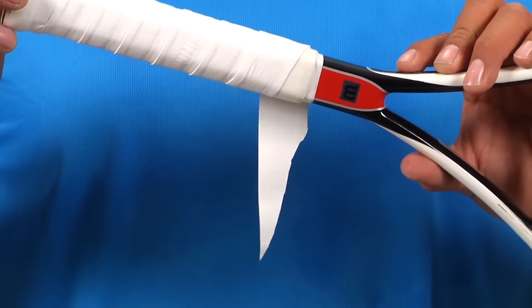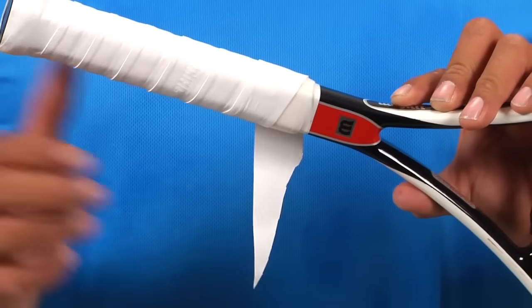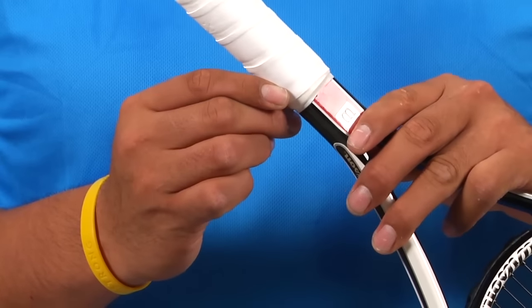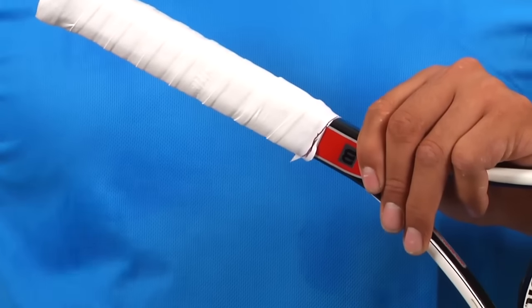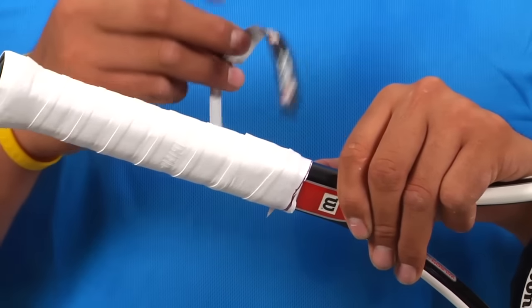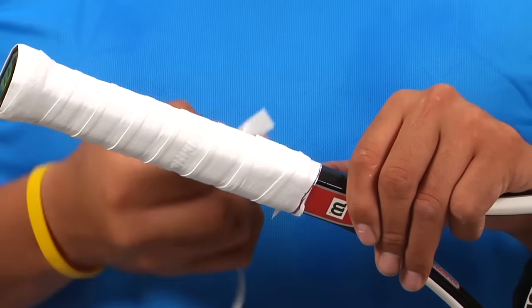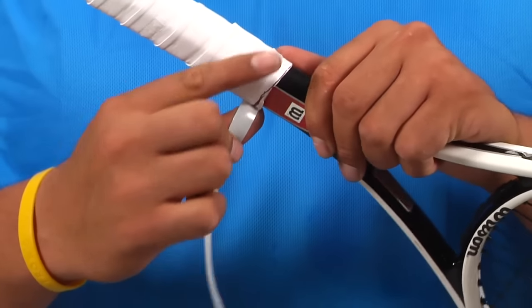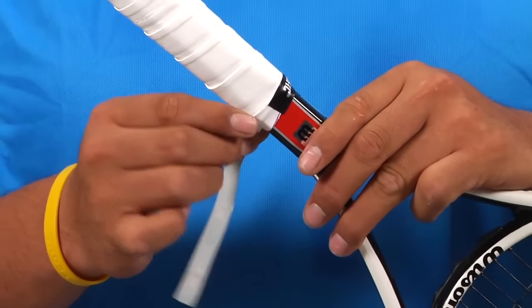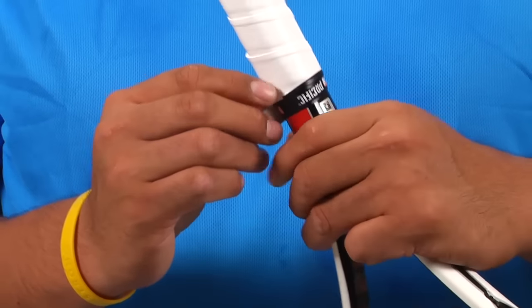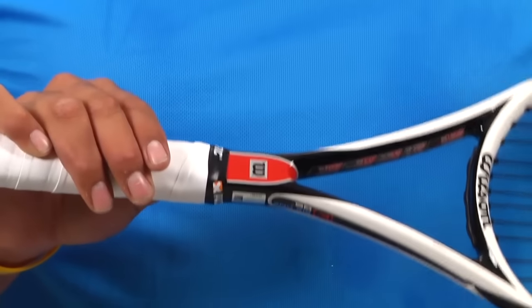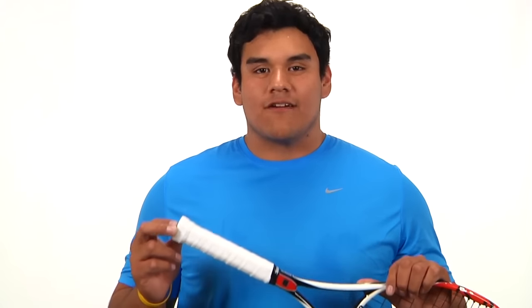So at this point you want to go ahead and get your finishing tape ready to go, wrap the rest of the over grip, grab your finishing tape and you're ready to go hit the courts. Okay tennis fans, so that does it for us. Stay tuned for some more how-to videos from Tennis Express.